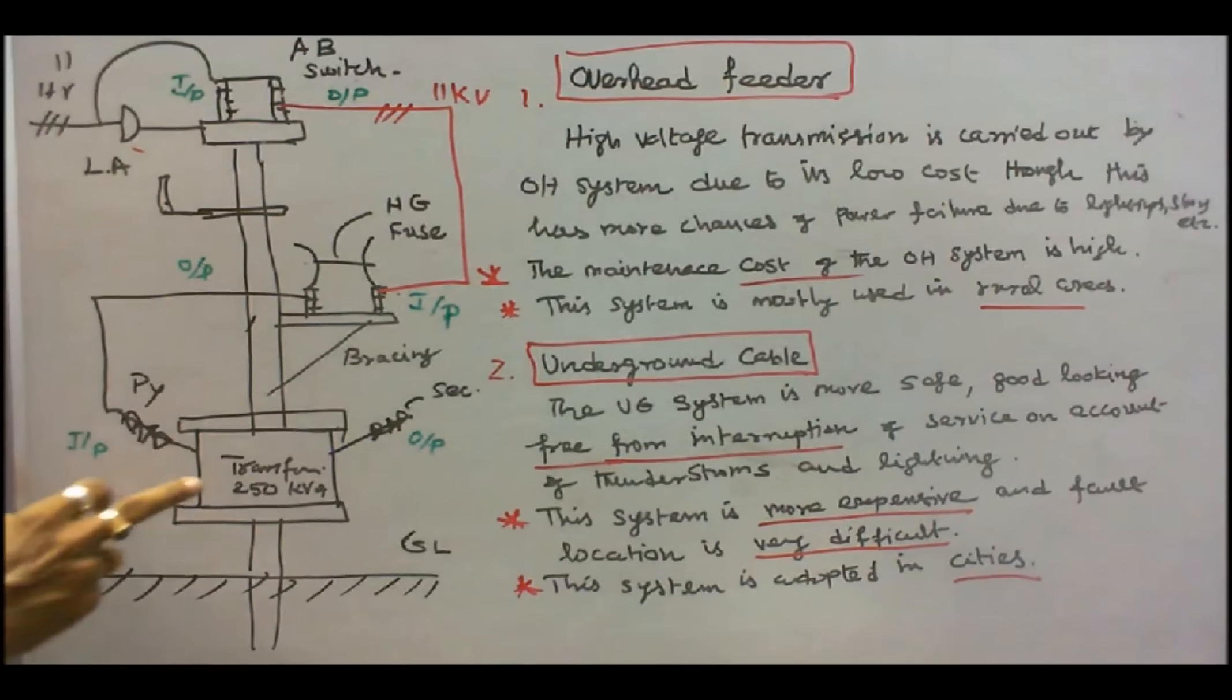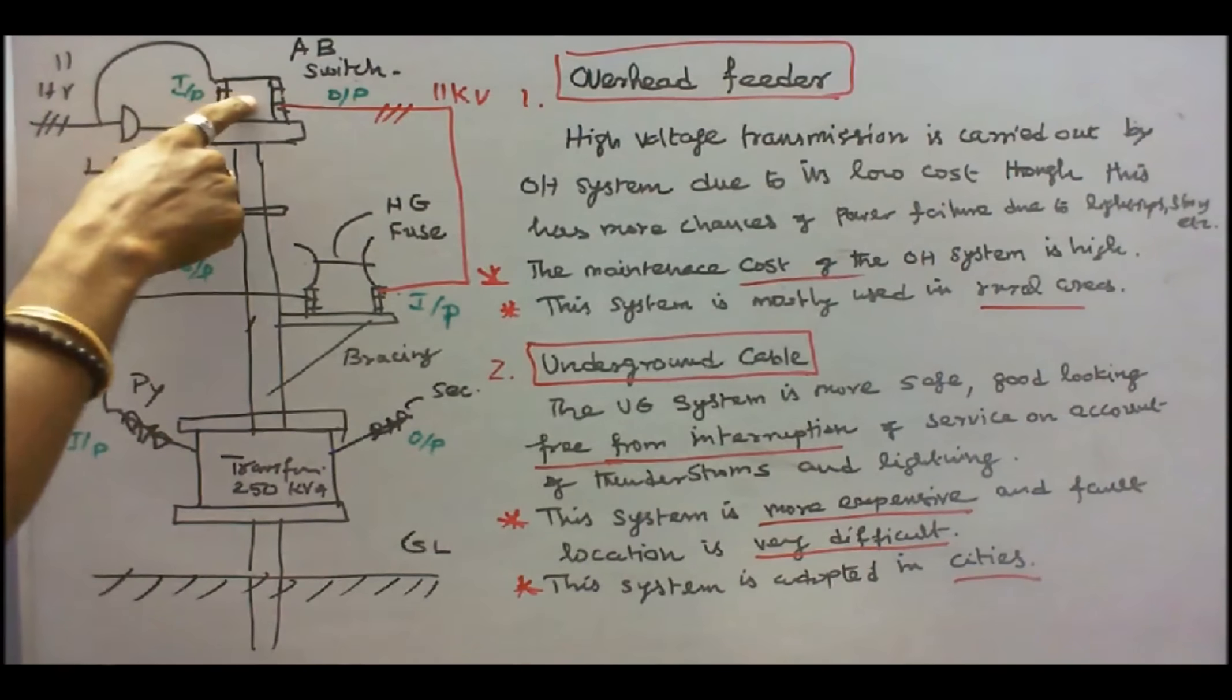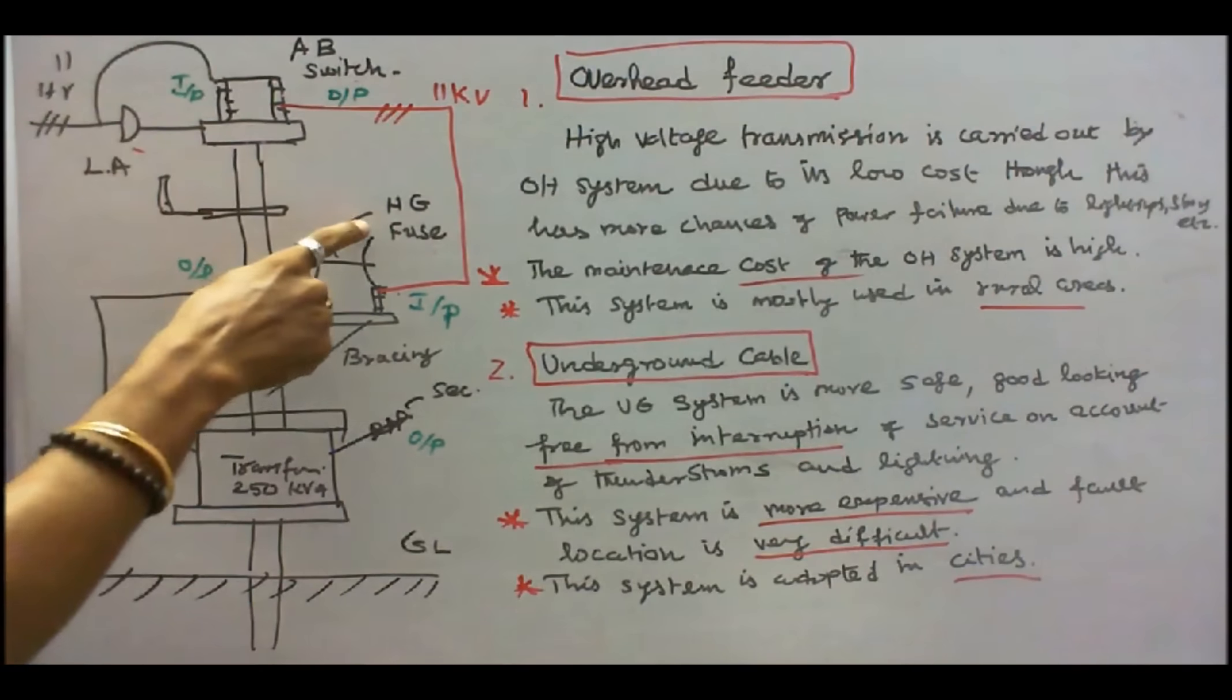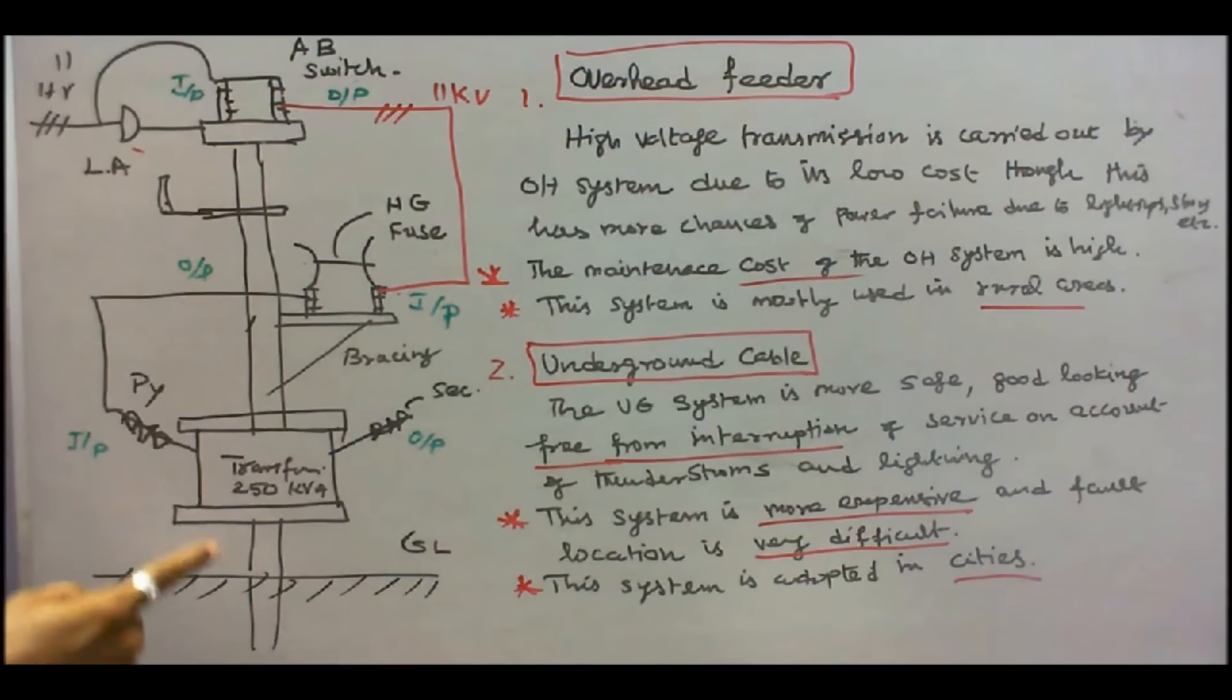Here, a 250 transformer is installed on a 2-pole structure. Here, this is the incoming 11KV line, 11,000 volts. This is the air brake switch. This is the horn gap fuse unit. And this is the transformer primary. This is the transformer secondary.